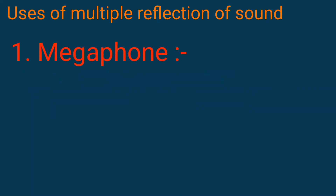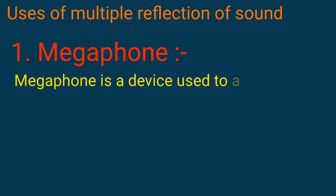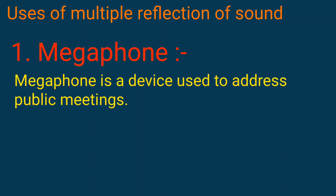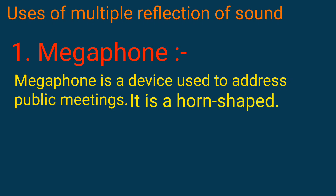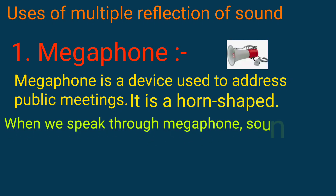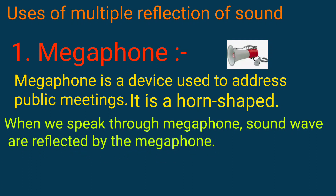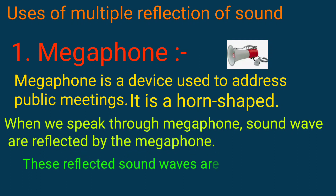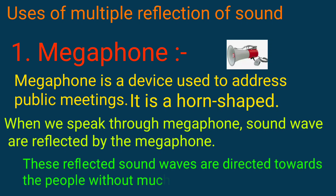Multiple reflection of sound is used in megaphones. A megaphone is a horn-shaped device used to address public meetings. When we speak through a megaphone, sound waves are reflected by the megaphone, and these reflected sound waves are directed toward the people without much spreading.